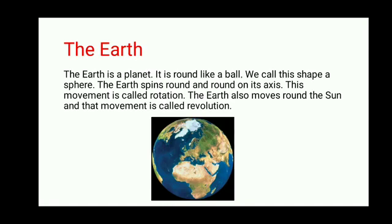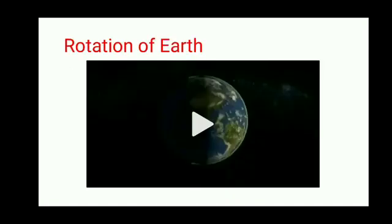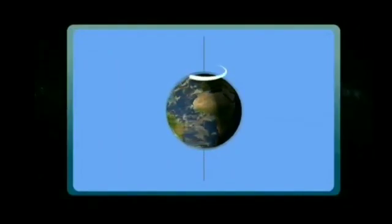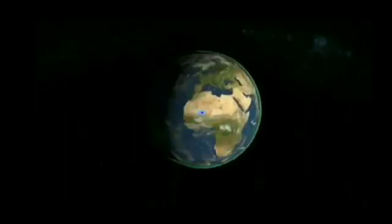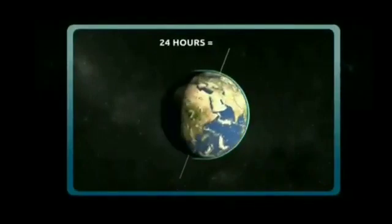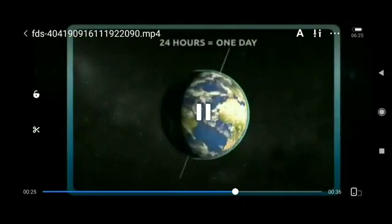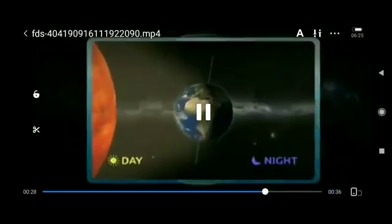Now let's discuss rotation and revolution in detail. The Earth is continuously spinning on its axis — this is called rotation. That black line shows the Earth is moving on its axis. One full rotation completes in 24 hours, which means in one day. That one complete rotation causes day and night.